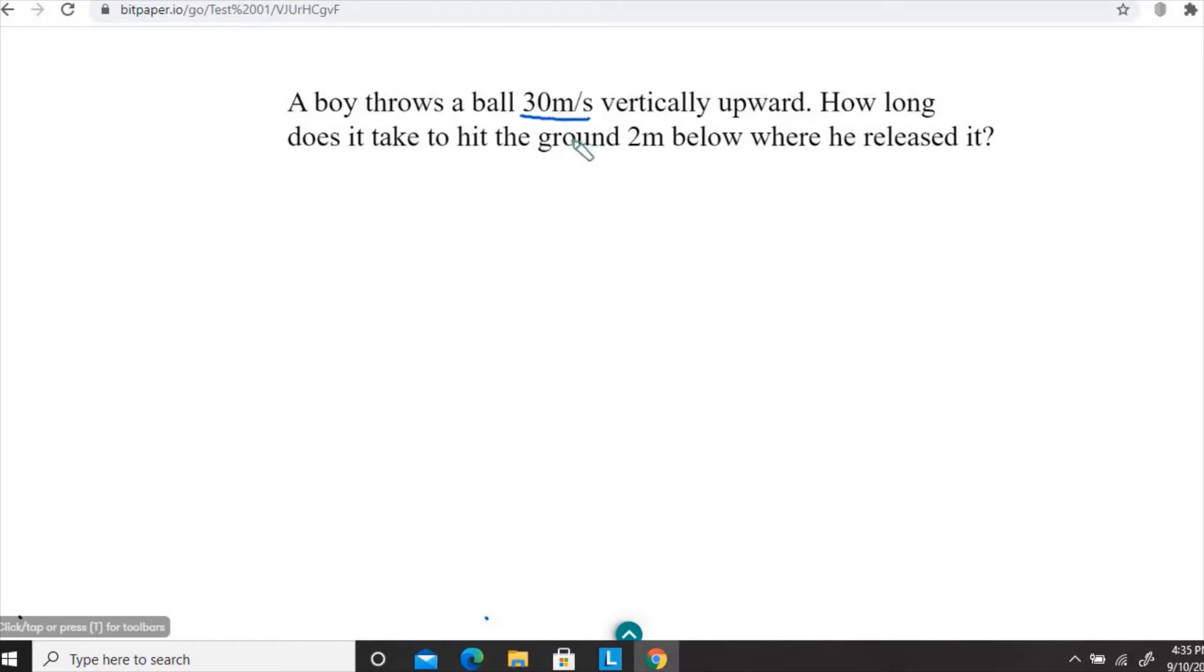In this example, a boy throws a ball 30 meters per second vertically upward. That's the initial velocity. How long does it take for the ball to hit the ground two meters below where he released it?